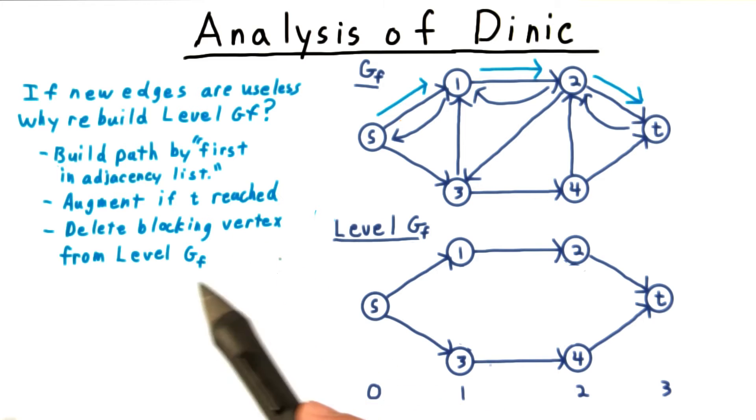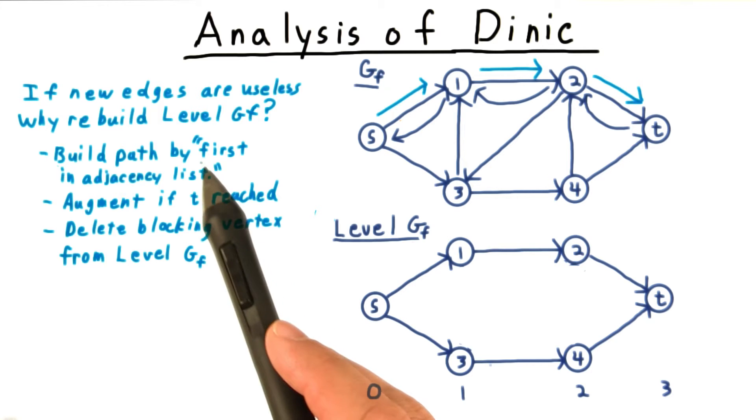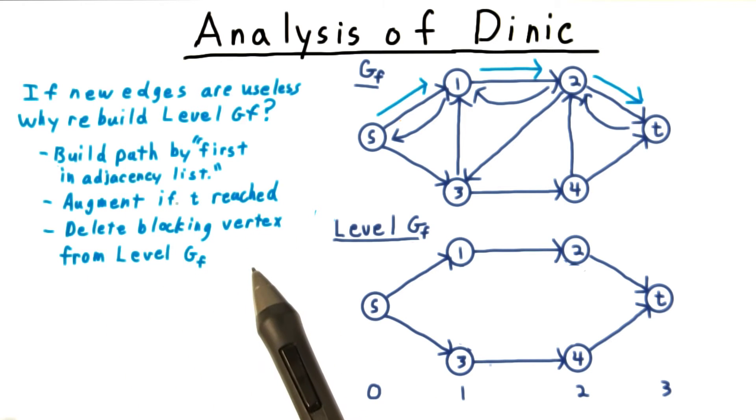More precisely, given the possibly outdated level graph, we can build a path from source to sink just by making the first vertex on the adjacency list the next vertex in the path.